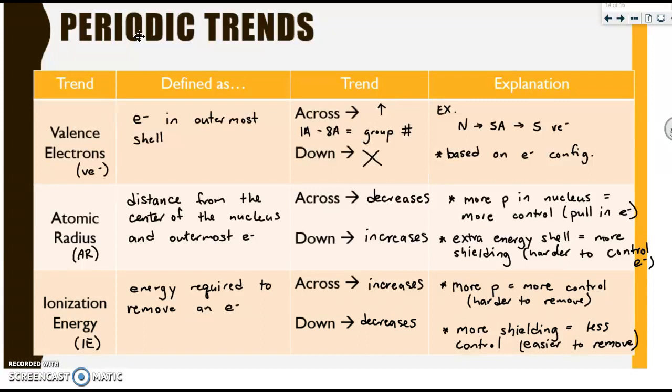For ionization energy, the energy required to remove an electron is the definition. It is the exact opposite trend of atomic radius, but for the same exact reasons. So it increases across and decreases down. There's more protons, more control. So the electrons are harder to remove. As you go down, it decreases because there's more shielding, which means less control from the nucleus. And therefore, they are easier to remove.